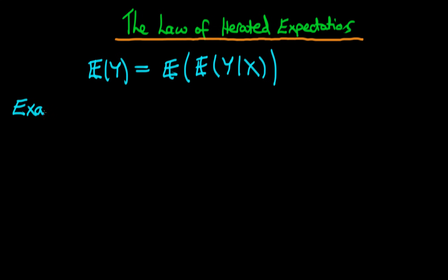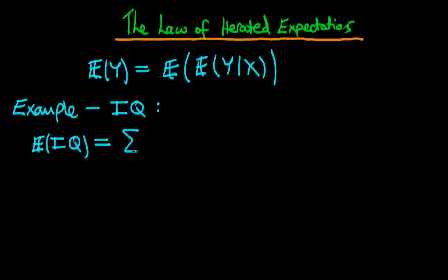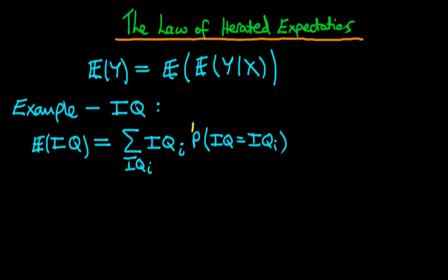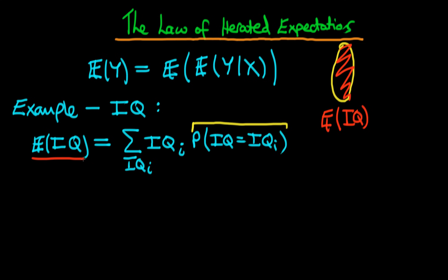To explain what this means, I'm going to use an example. We're looking at the level of IQ within a population, and specifically what we might be interested in is the average level of IQ within that population — in other words, the expected value of IQ. We could work this out by summing over all the possible values IQ can take, using a weighted sum of those IQ levels times the probability that IQ takes on that particular value. That probability represents the proportion of the population with that particular IQ. So we are taking a weighted average of IQ across the entire population — in other words, the unconditional expectation of IQ.